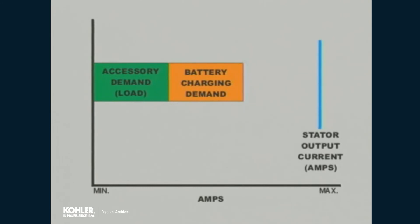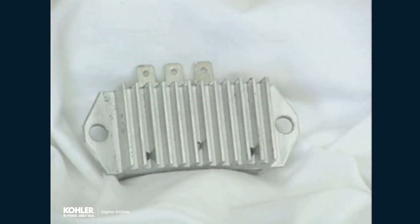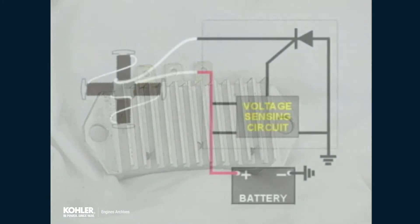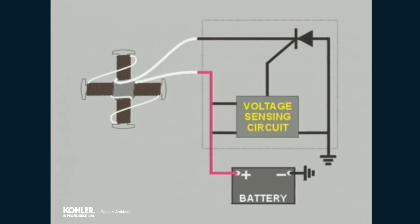In higher output systems, this type of system would not be sufficient to control the charging output and provide stable system voltage. A solid-state electronic regulator is used to control charging system output. Solid-state electronic components monitor battery voltage and compare it to stator output voltage. Internal switching controls charging output. In a simplified explanation, a voltage sensing circuit controls a solid-state switch.